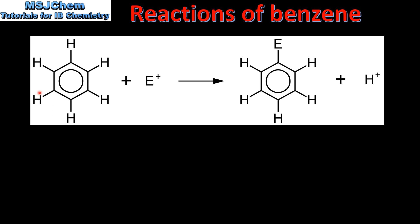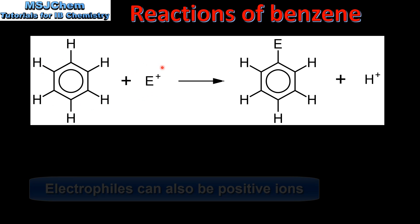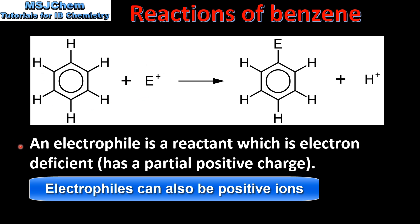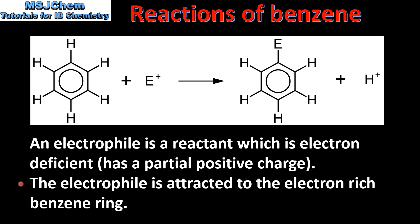In this diagram we have the benzene molecule and an electrophile. An electrophile is a reactant which is electron deficient — it has a partial positive charge. The electrophile is attracted to the electron rich benzene ring. In the reaction the electrophile is attracted to the electron rich benzene ring and replaces a hydrogen atom on the benzene molecule.